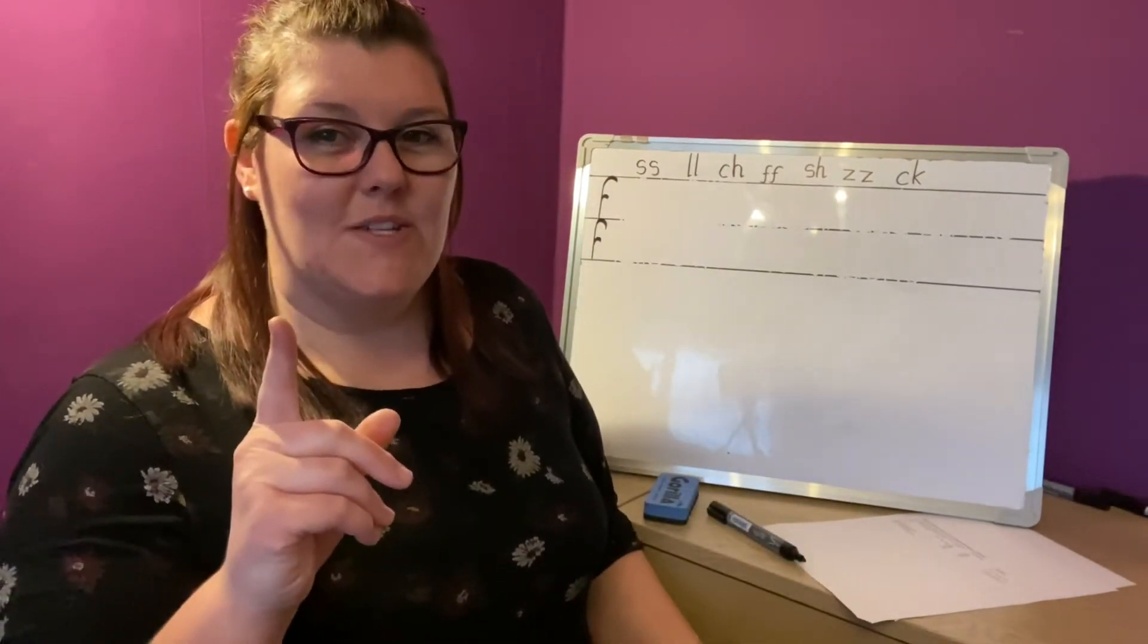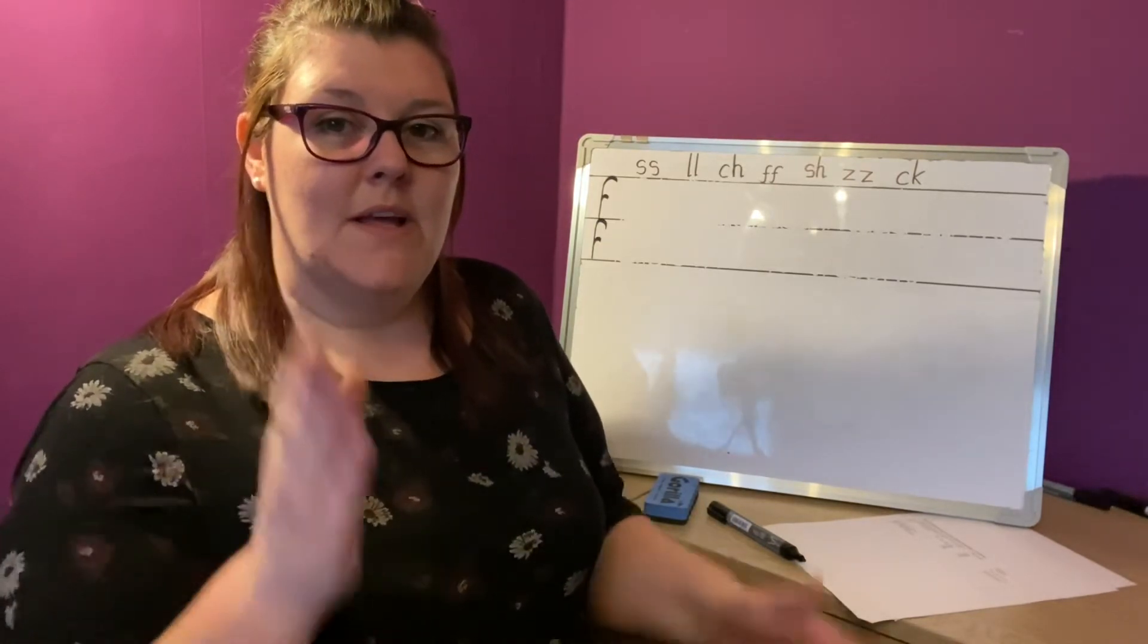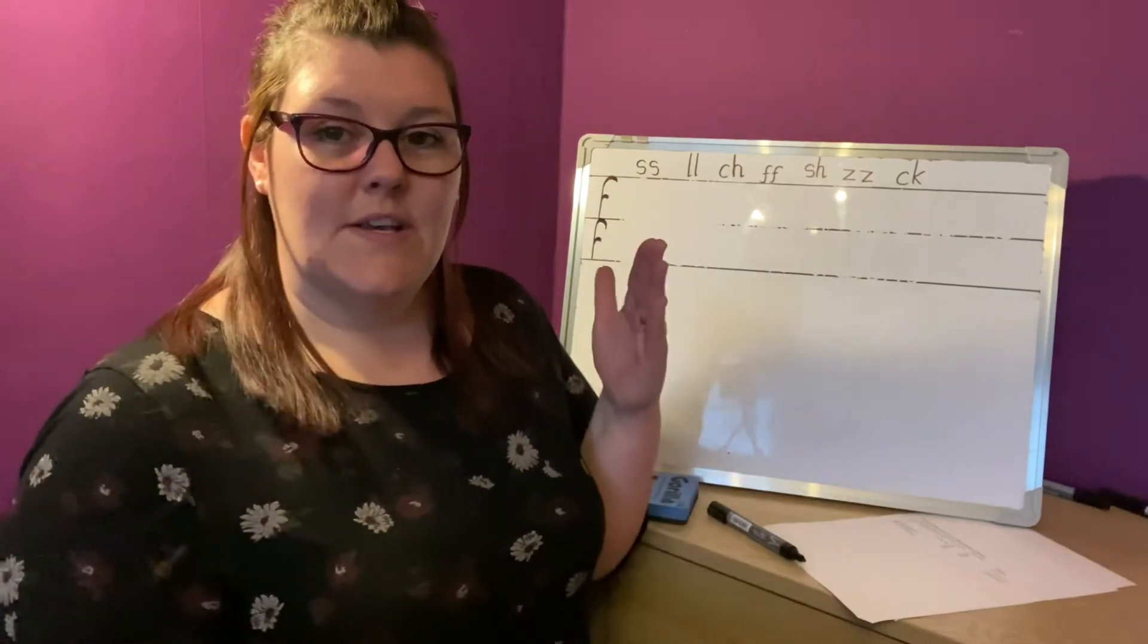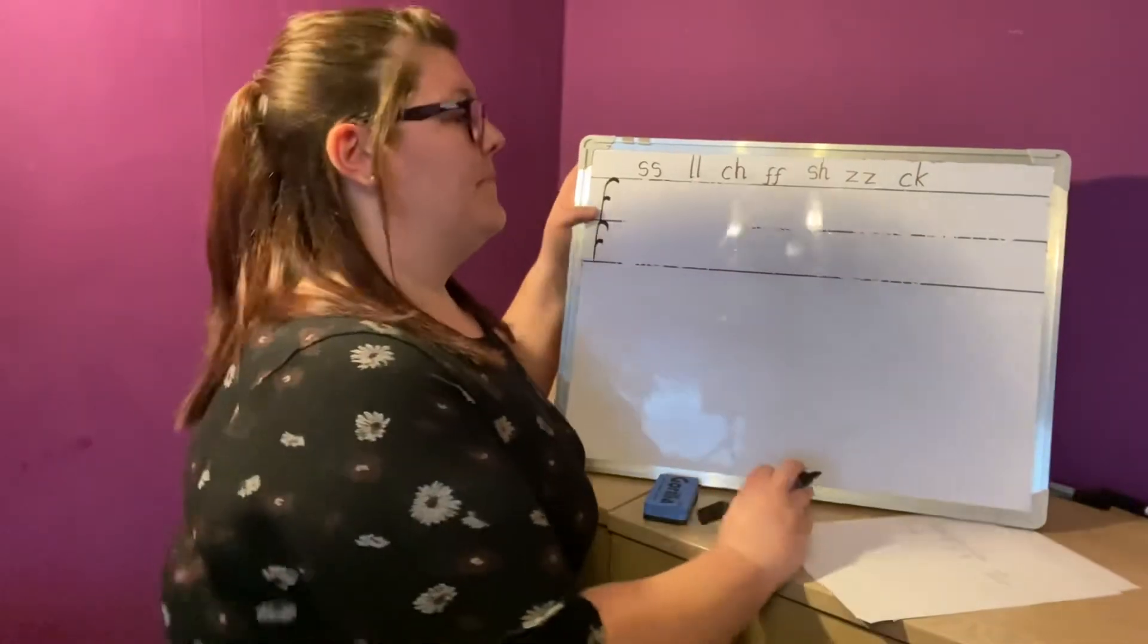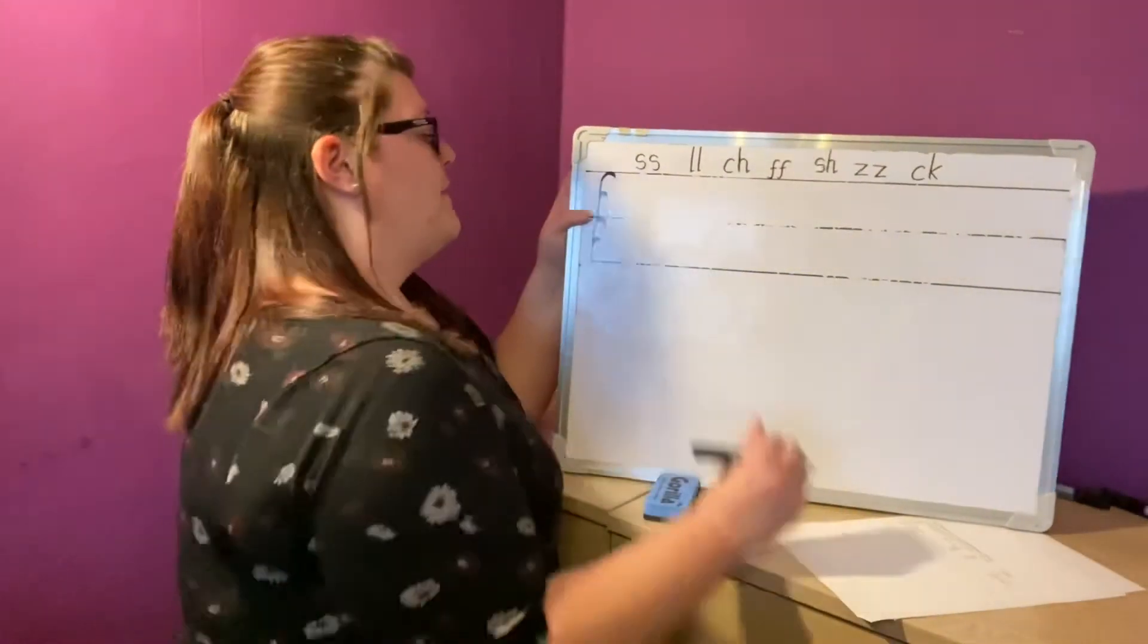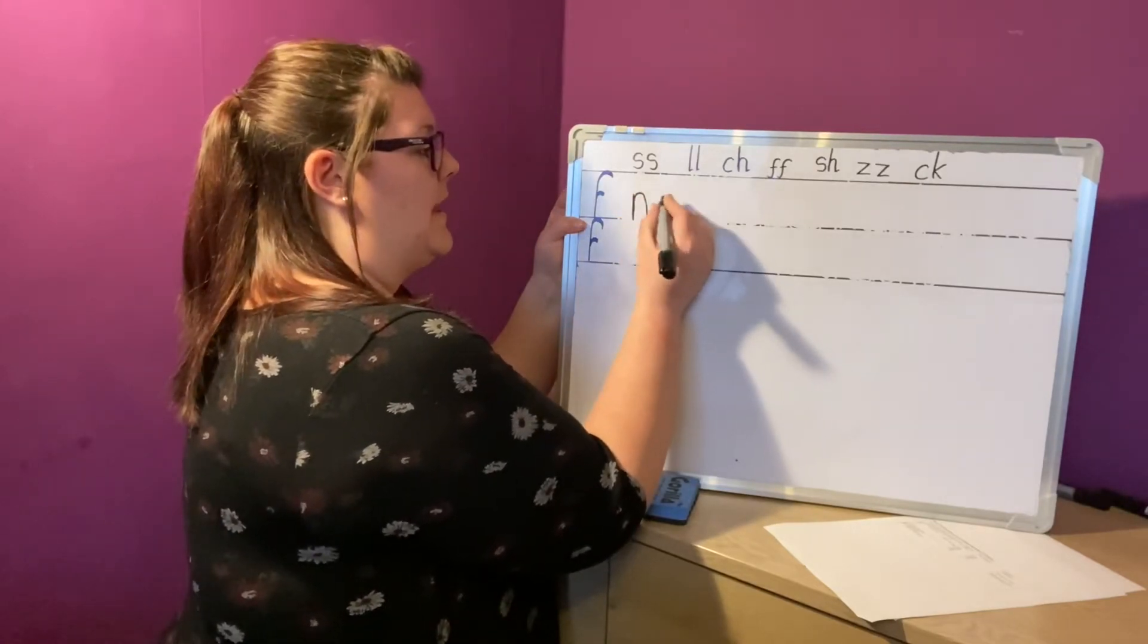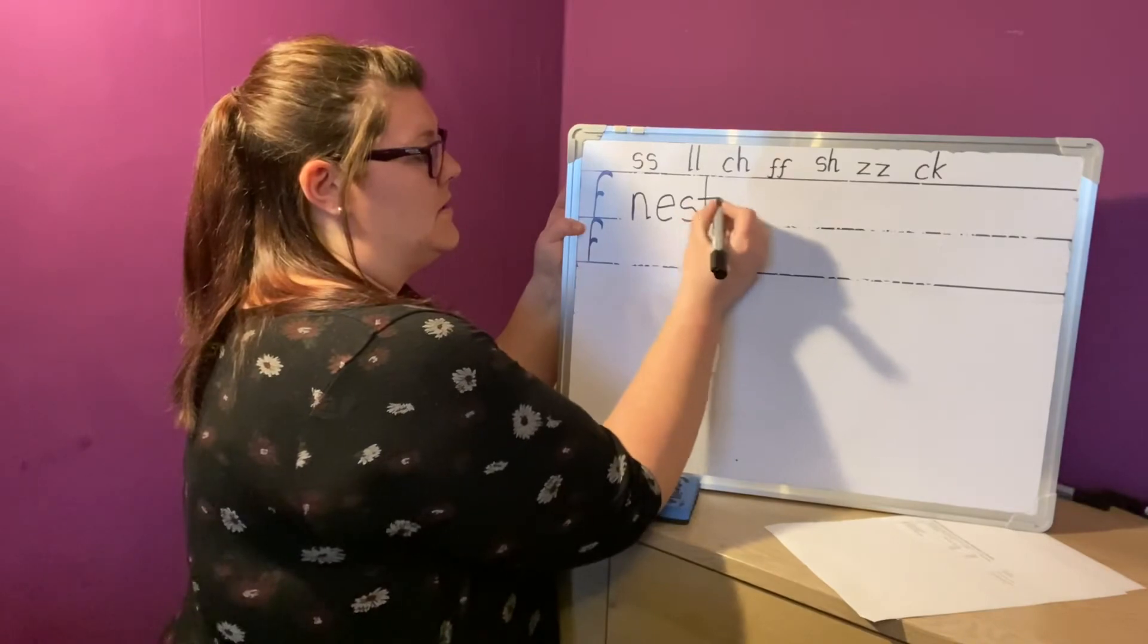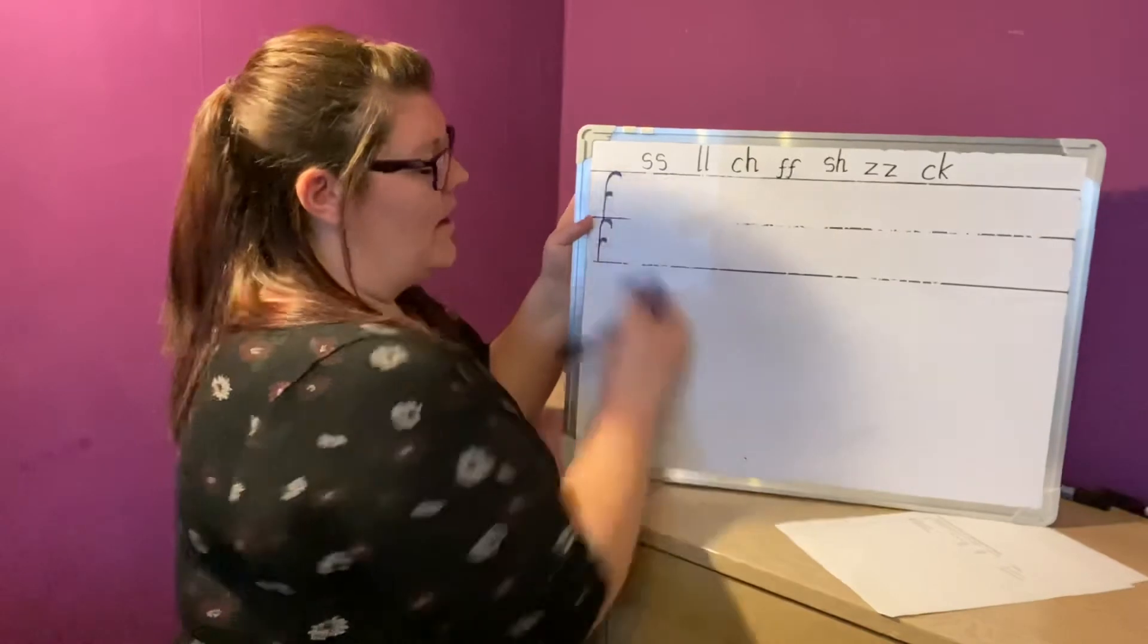And again, make sure you don't get net. We want nest. N-E-S-T. Nest. Well done. Write it down for me. It's got four sounds. N-E-S-T. Nest. Well done.